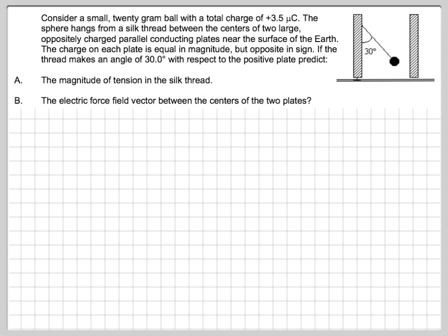So the place to start in a problem like this is by writing out the initial conditions. I'm extracting the 20 grams of mass and writing it as 0.020 kilograms. I'm bringing the 3.5 microcoulombs out of the text and writing it with a factor of times 10 to the negative 6 ready for a calculation, and I'm simply restating the hanging angle to be 30 degrees.